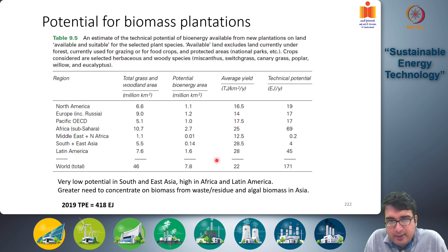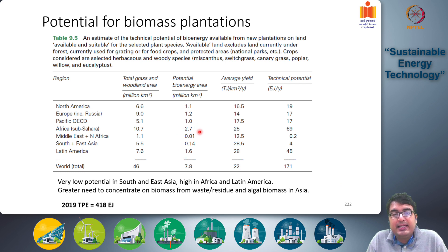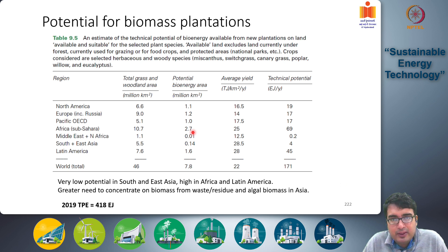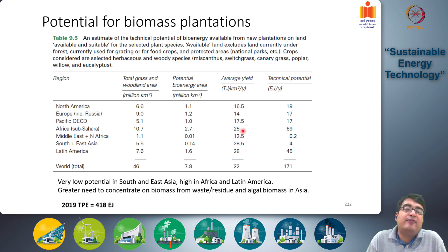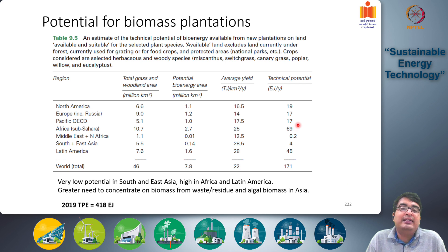Looking at these charts, the largest potential bioenergy area lies in sub-Saharan Africa — Africa below the Sahara Desert. The potential bioenergy land area there is 2.7 million square kilometers, with an average yield of around 25 terajoules per square kilometer per year, giving a technical potential of almost 70 exajoules per year of bioenergy production.